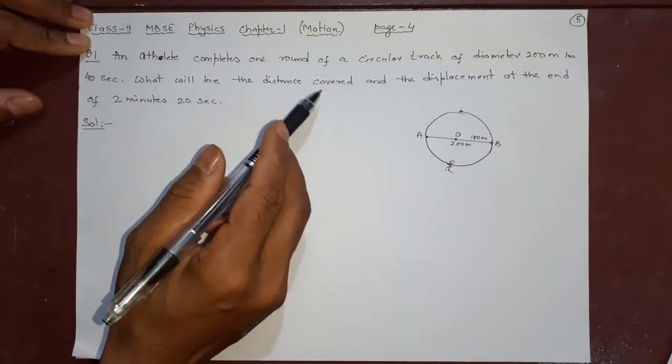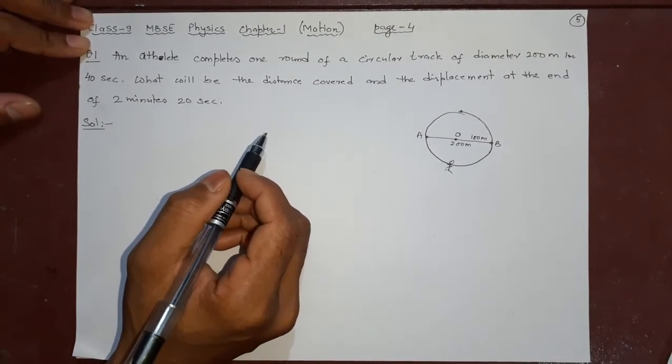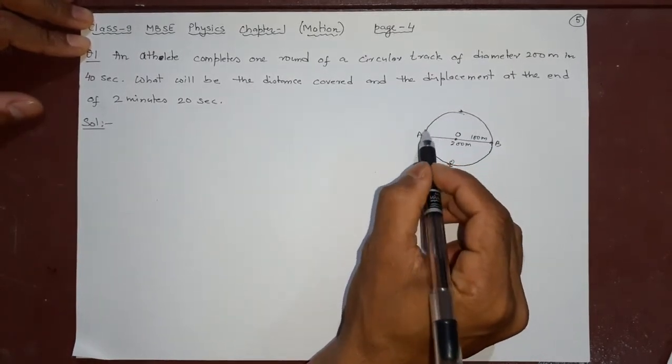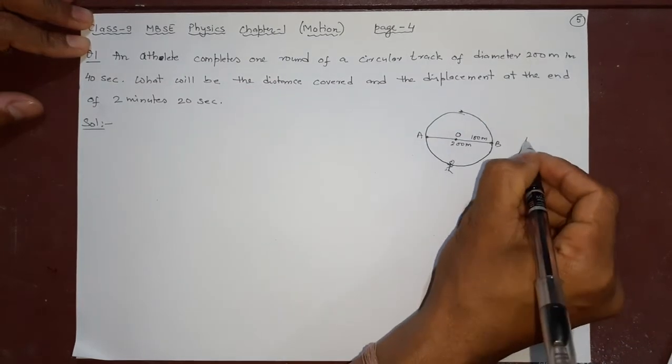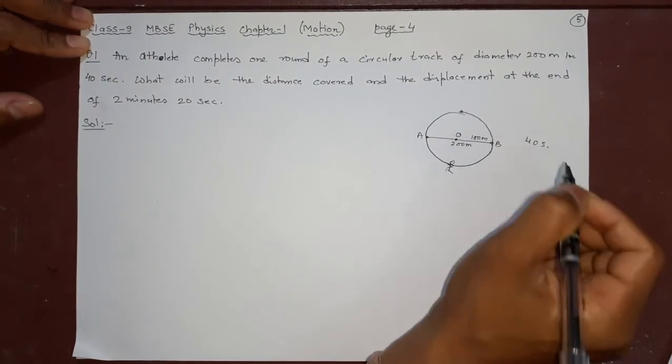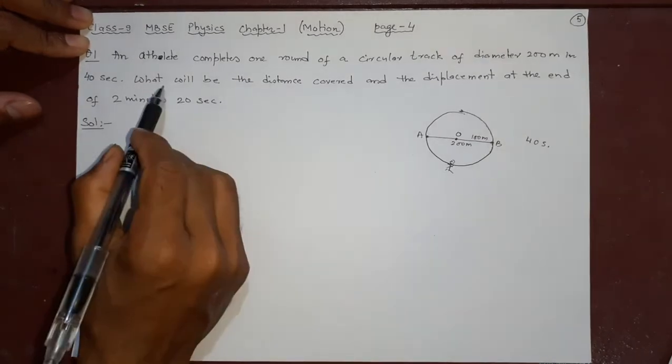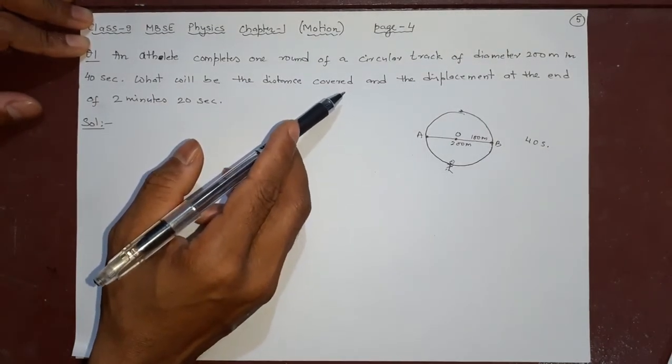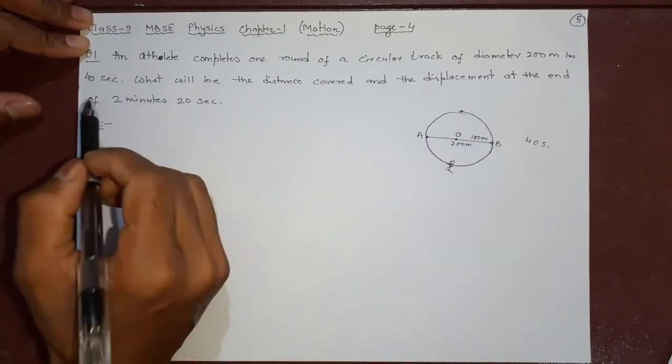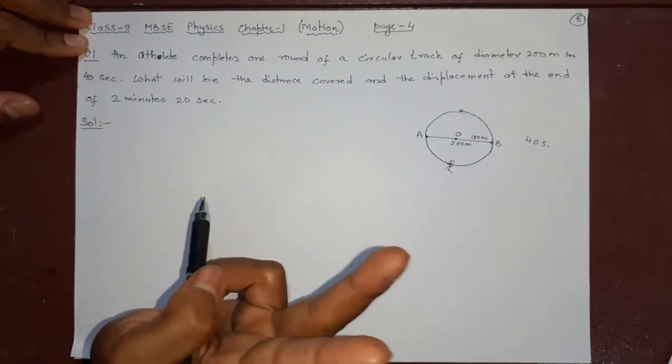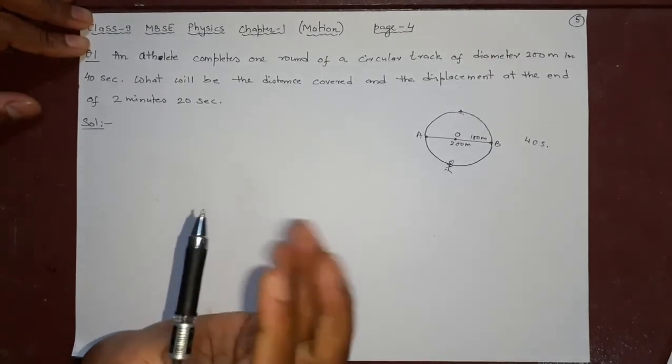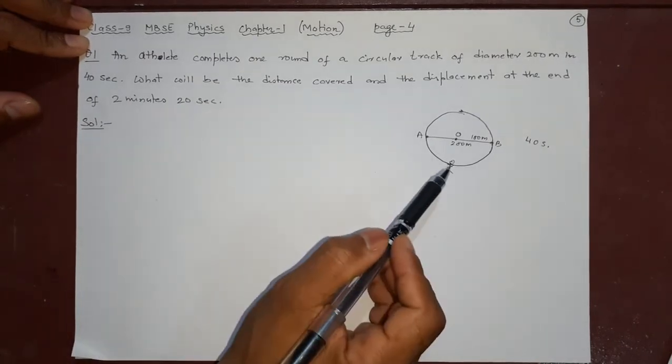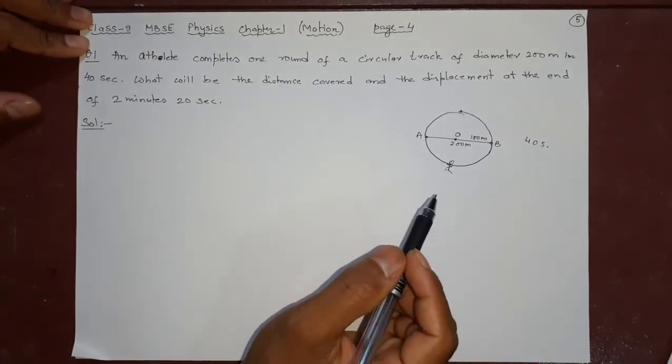An athlete completes one round of a circular track of diameter 200 meters in 40 seconds. This person goes here and comes back here in 40 seconds. Now what will be the distance covered? How much distance will he cover? And what is the displacement at the end of 2 minutes and 20 seconds?